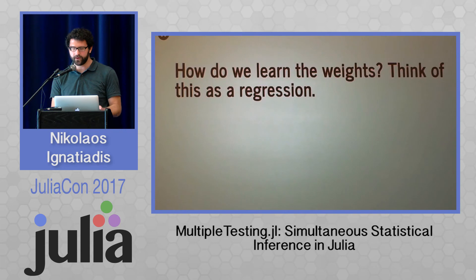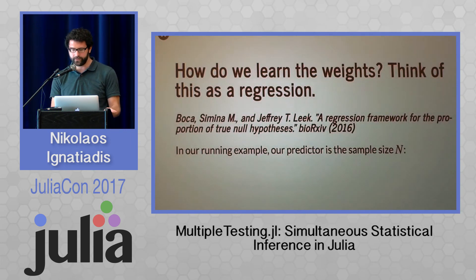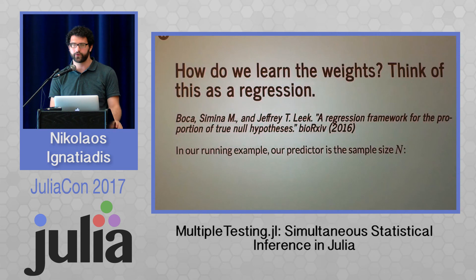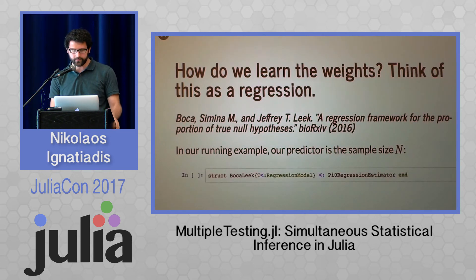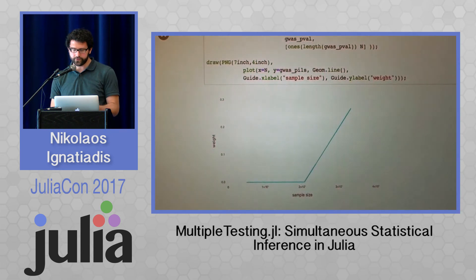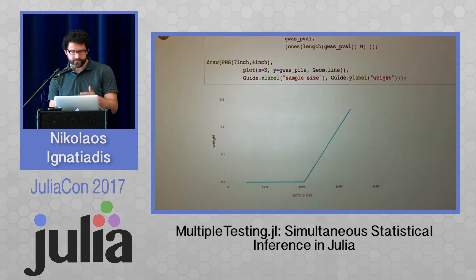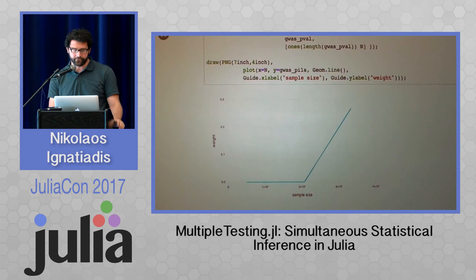Another question is how can we actually learn the weights from the data? Before I showed a histogram with a binary split, but of course we'd like to treat sample size as a continuous predictor. Recently, Simina Boca and Jeff Leek published a paper where they think of this as a regression framework. We introduced the Boca-Leek type, parametrized by a regression model as defined in StatsBase. So now we can use whatever regression model has the fit and predict methods to get weights as a function of our covariates. Here I fit a linear model from the GLM package — you can see this linear trend, where the larger the sample size, the larger weight was assigned, with truncation at zero because weights can't be negative.